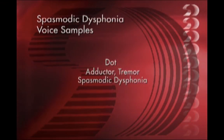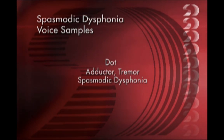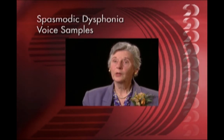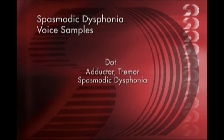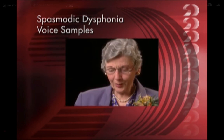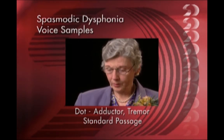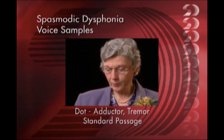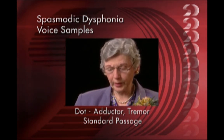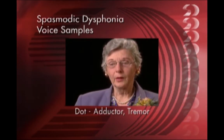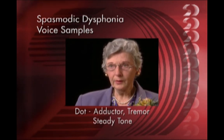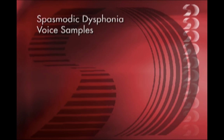The other type, adductor spasmodic dysphonia, is where the vocal folds want to close really tightly rather than closing just enough to phonate. You can hear both the adduction — the vocal folds snapping shut — and a tremor component on top of it. You can hear that intermittent tightness and strain in the voice. The tremor is probably secondary to the spasmodic dysphonia — her trying to fight the dystonia in the vocal folds.